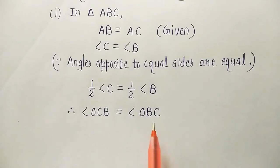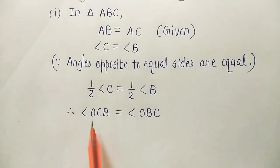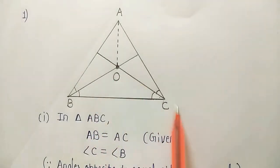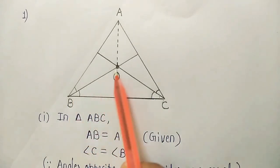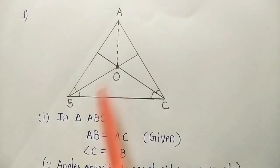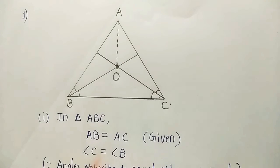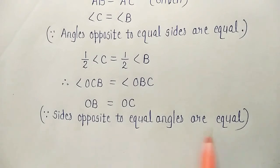We have learned theorem 7.3: the sides opposite to equal angles of a triangle are equal. If two angles are equal, their opposite sides will be equal. Now refer to the figure — in triangle OBC, angle OCB is opposite to side OB, and angle OBC is opposite to side OC. So OB is equal to OC, because sides opposite to equal angles are equal. We were asked to prove OB equals OC, which we have proved.